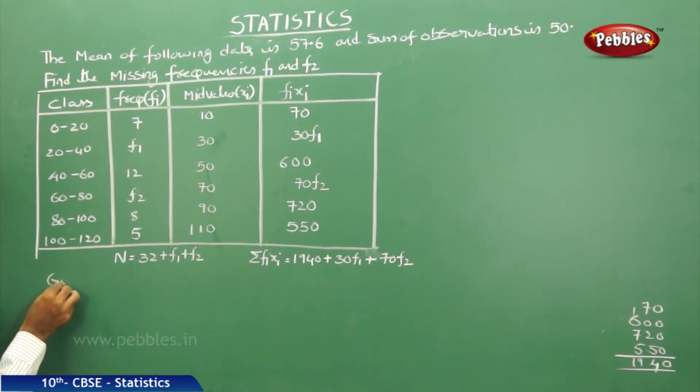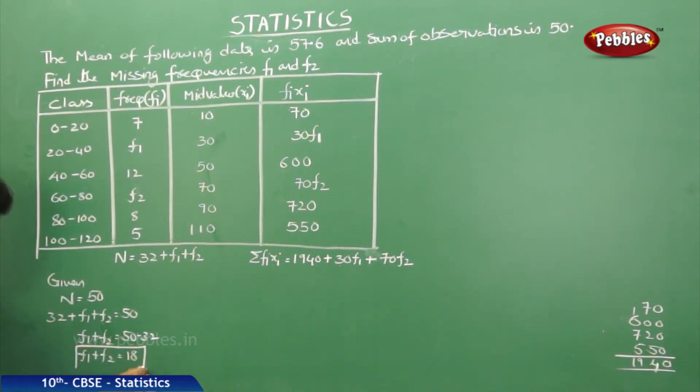Now, given N is equal to 50. But what is your N? 32 plus F1 plus F2 is equal to 50. That is, F1 plus F2 is equal to 50 minus 32, that is 18. This is equation 1.